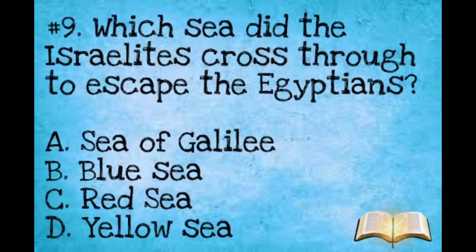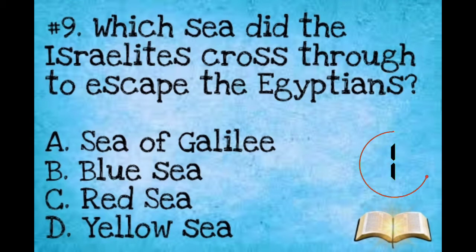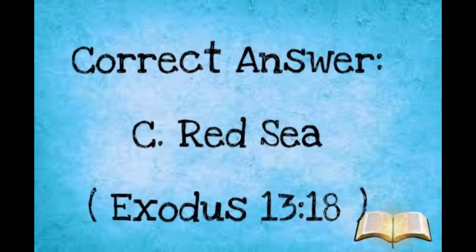Number nine: Which sea did the Israelites cross through to escape the Egyptians? A: Sea of Galilee. B: Blue Sea. C: Red Sea. D: Yellow Sea. The correct answer is C, Red Sea.